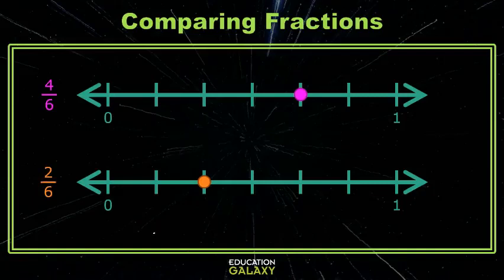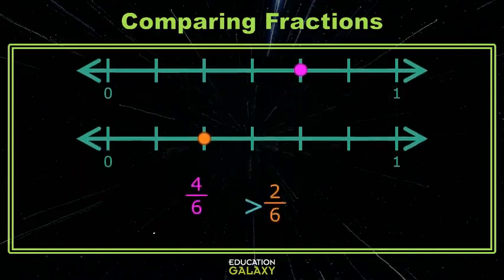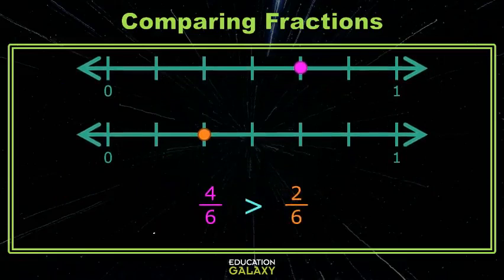The dot that is farther to the right is the larger fraction. In this case, four sixths is greater than two sixths.